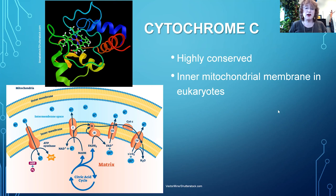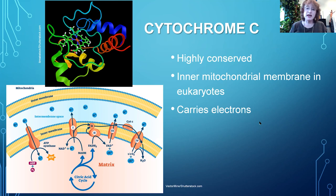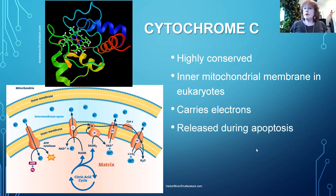Cytochrome C is off to the right of the electron transport chain and shuttles electrons from complex three to complex four. Because the iron can switch between ferrous and ferric, we can easily move electrons using that iron ion in the middle of the heme molecule. Cytochrome C is also the first protein released during apoptosis — programmed cell death — and its release indicates the cell is probably going to die.